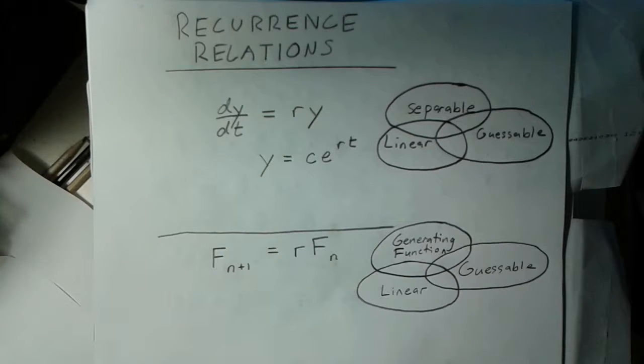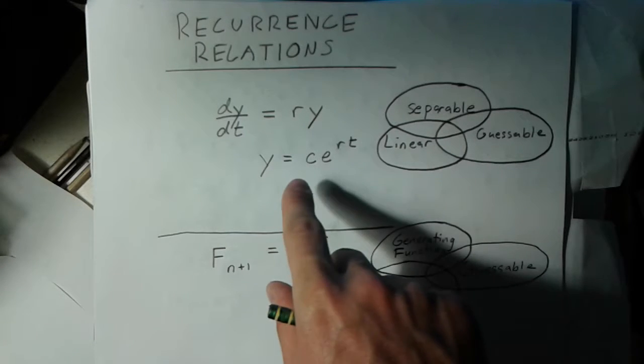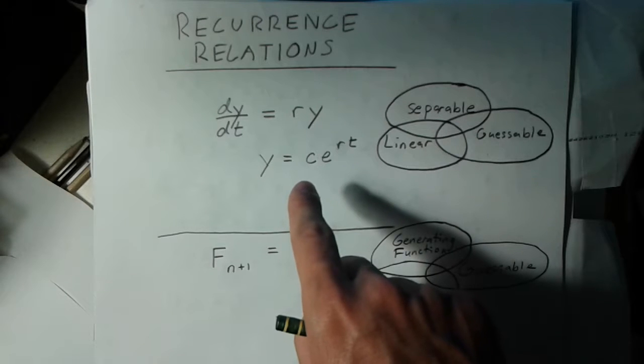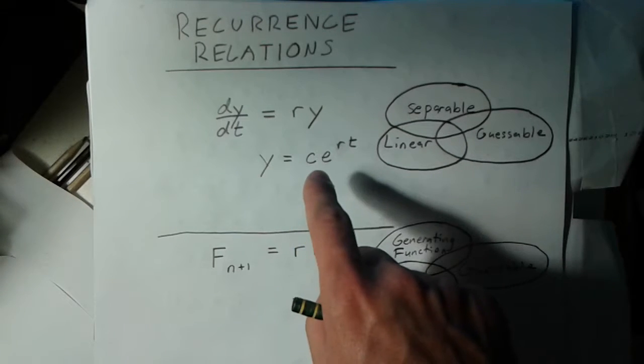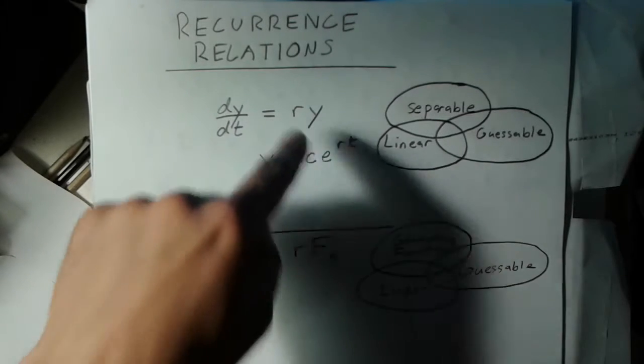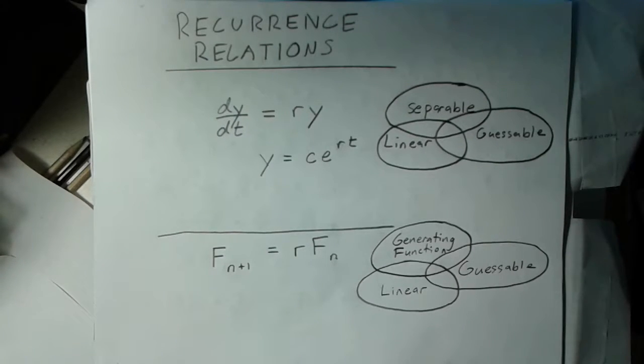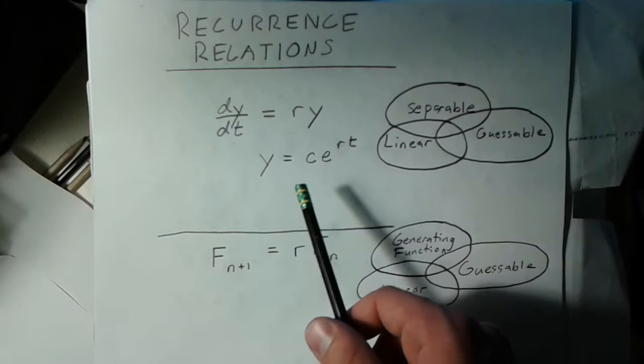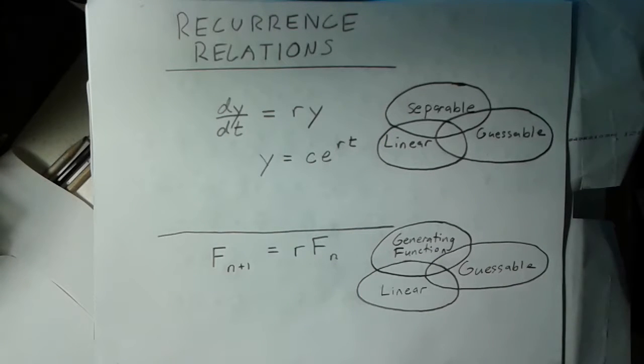So, in differential equations we looked at different classes of differential equations and different methods for solving them. This particular one is probably one of the first ones you may have encountered because it's pretty easy to guess the solution. If this r were 1, we could easily see that the solution could be e to the t because e to the t is its own derivative.